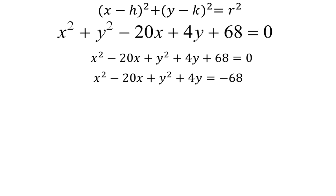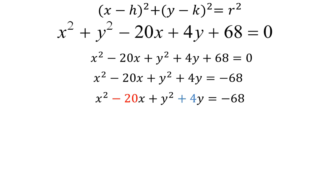From here, I'm going to highlight the number in front of my x and the number in front of my y, because they are going to help us get the equation of our circle later. The number in front of x is negative 20 — I'm using red for numbers associated with x. The number in front of y is 4, and I'm using blue for numbers associated with y.